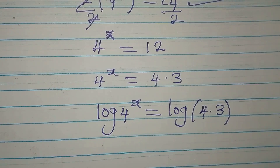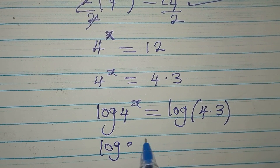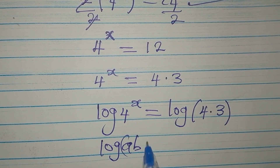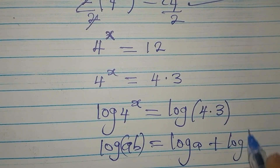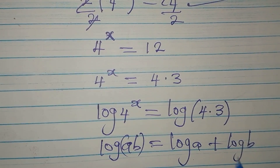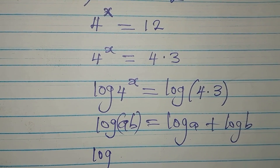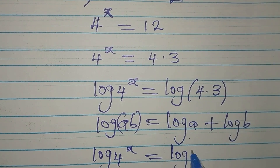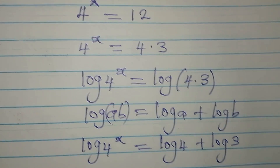Remember that log of a product — log(ab) — is the same as log a plus log b. We apply the same rule here, so the left side is log of 4 to the power of x, and the right side becomes log 4 plus log 3.